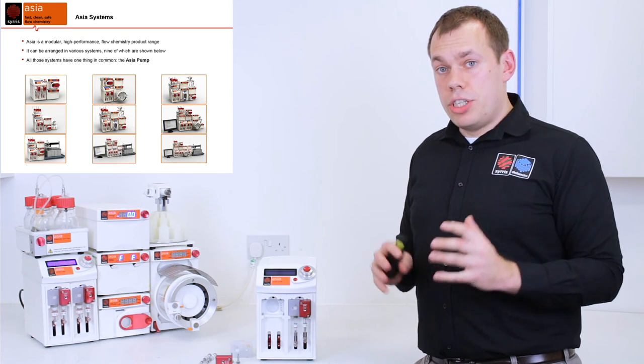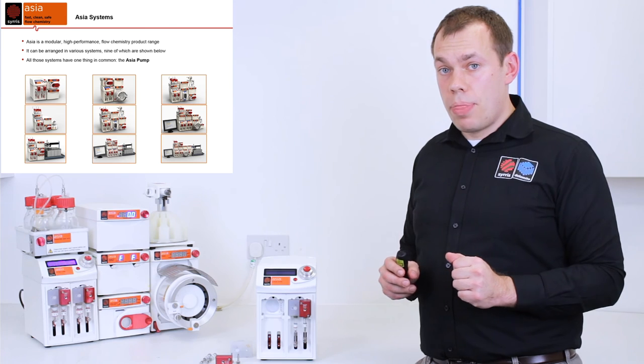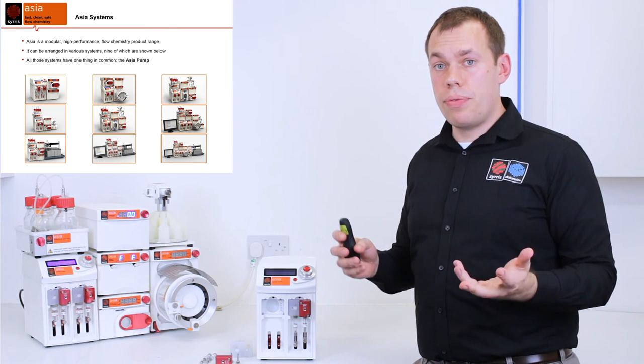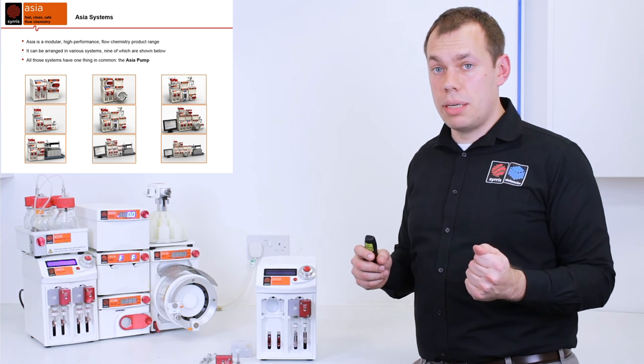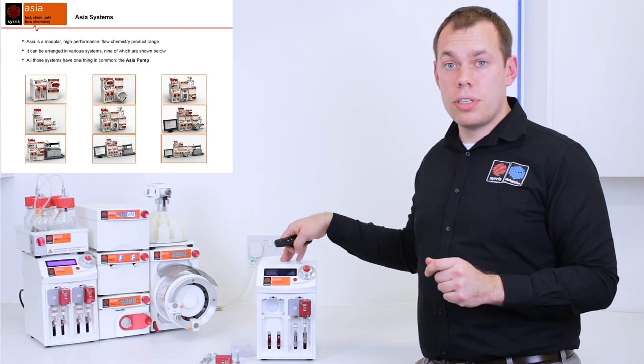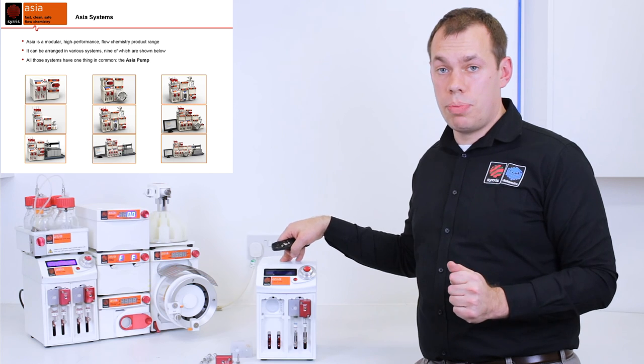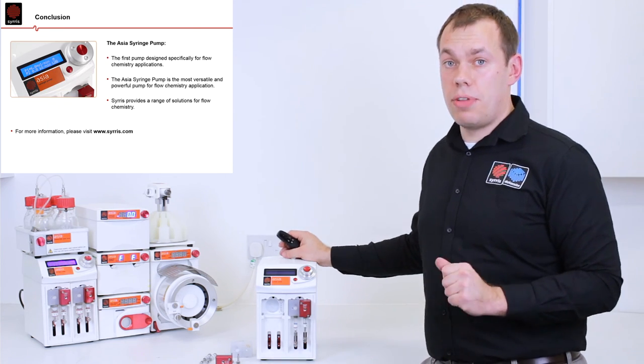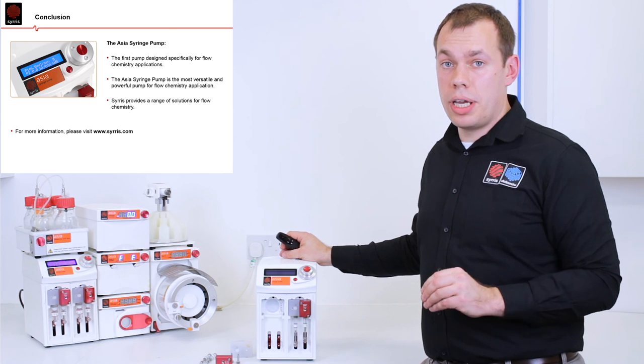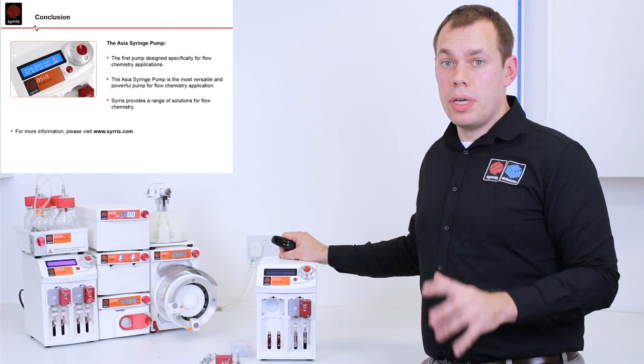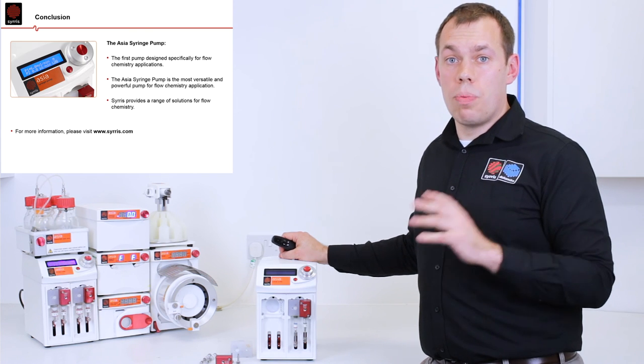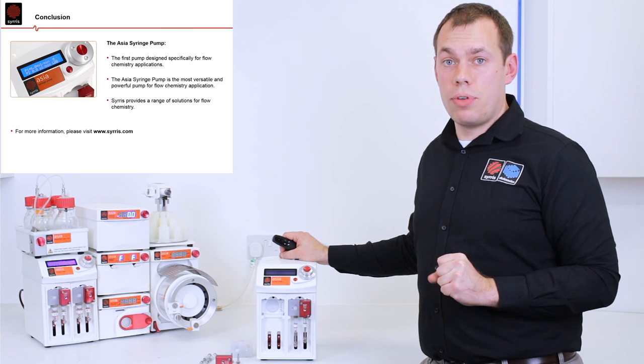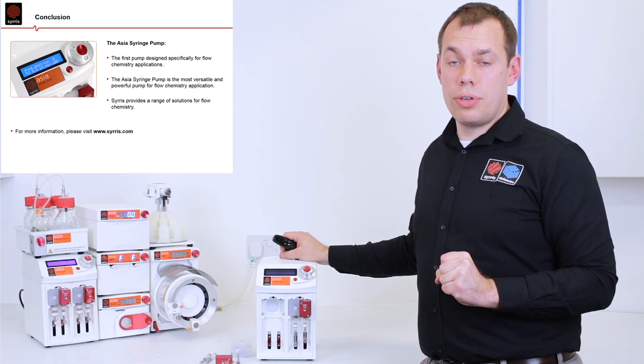Cirrus offers a wide range of modules for flow chemistry. All those modules can be assembled in different types of systems. But all the systems have one thing in common, the Cirrus Asia syringe pump. This pump is the first pump that has been developed specifically for flow chemistry. It's a high performance pump that enables you to access a wide range of chemistries. For more information, please have a look at www.cirrus.com.